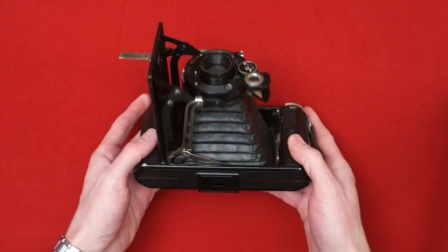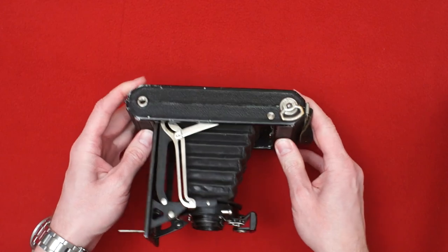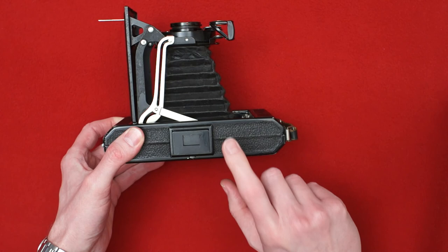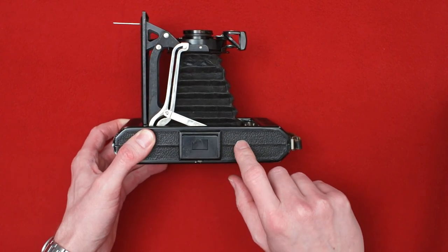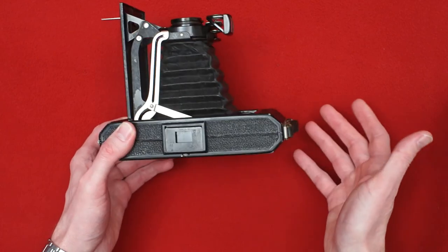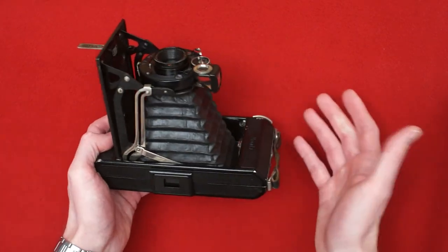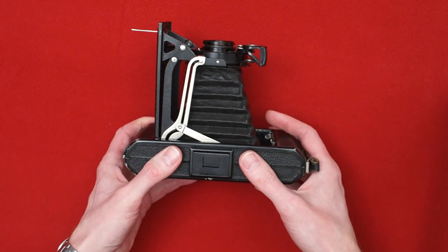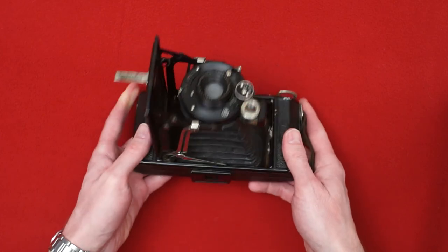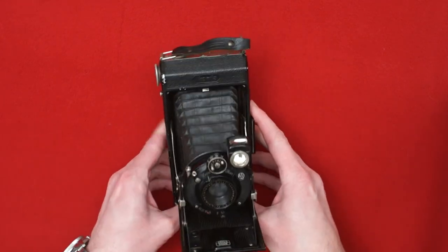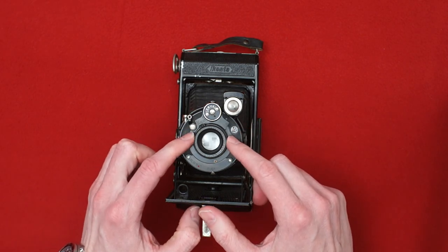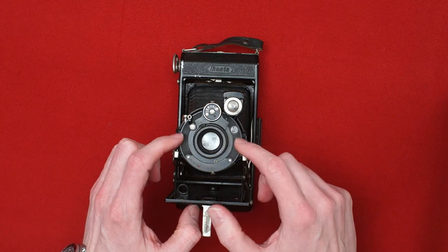I actually have a 1929 Zeiss Iconta catalogue and this model is not in it. The catalogue is probably produced in the early part of 1929, but it's already included in the 1930 catalogue. By 1934 this model was already out of production. It was replaced by a very similar model but with a lens where the maximum aperture was 4.5.